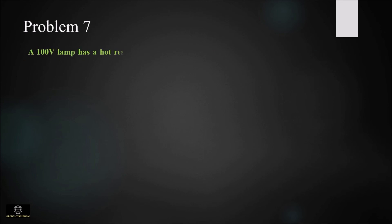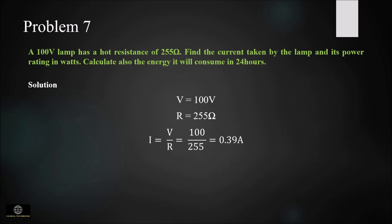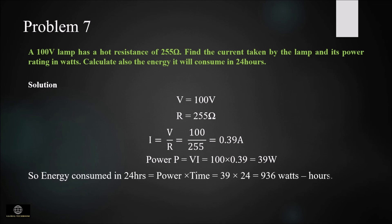A 100 volt lamp has a resistance of 255 ohm. Find the current taken by the lamp and its power rating. Also calculate the energy it will consume in 24 hours. Substituting in I = V/R gives the current as 0.39 ampere. Power = V × I = 100 × 0.39 = 39 watts. Energy is calculated using power × time, so 39 × 24 hours = 936 watt-hours.